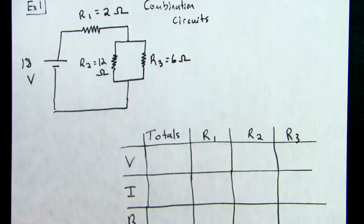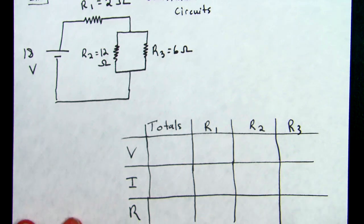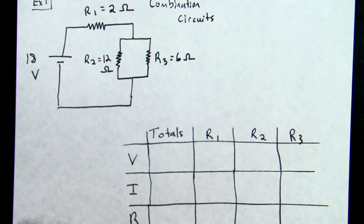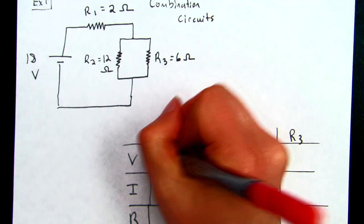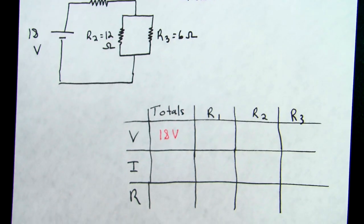Once again, I have the same chart we've been using with our totals R1, R2, and R3, and V equals IR. We're going to follow this same pattern. And as always, we're going to start with what is given to us. We know that we've got the total voltage, because we understand that that's next to the battery symbol, and we are given our three resistors.